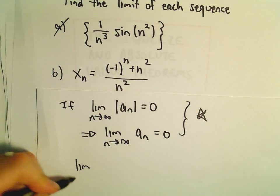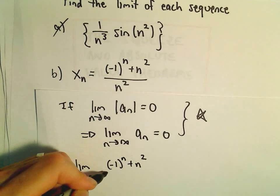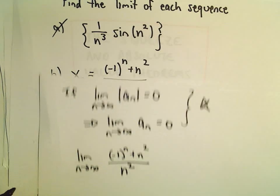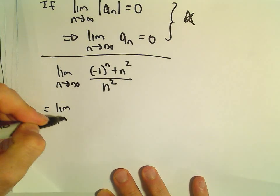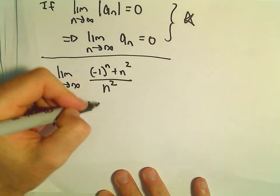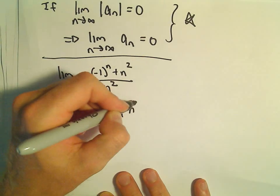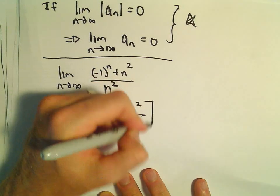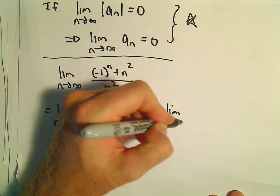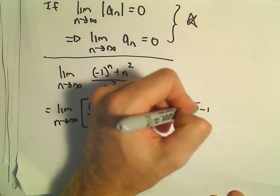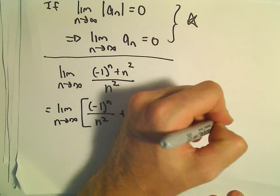We're going to take the limit as n goes to infinity of negative 1 to the n plus n squared, all over n squared. We'll break this up using some algebra and write it as the limit as n goes to infinity of negative 1 to the n over n squared, plus n squared over n squared. And n squared over n squared just gives us 1.